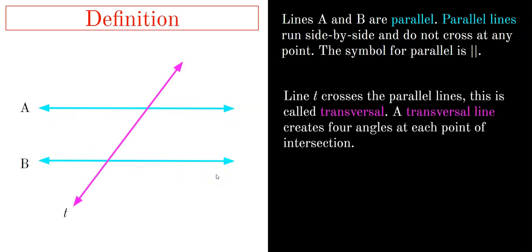If we have a line T that crosses the parallel lines, this is called a transversal. A transversal line creates four angles at each point of intersection — it intersects line A at one point and line B at another, and four angles are created at each intersection.